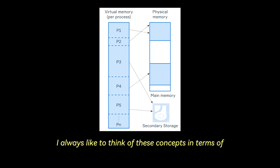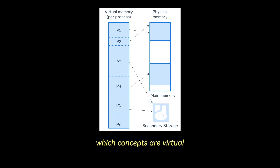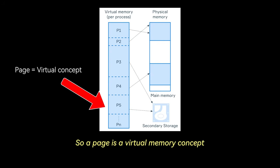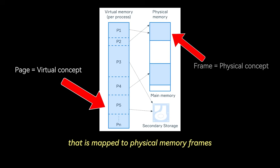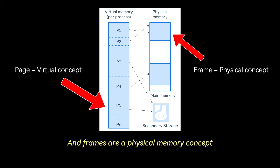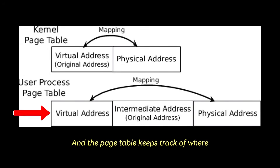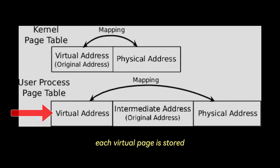It helps to think of these concepts in terms of what is virtual and what is physical. A page is a virtual memory concept — also known as a virtual page — and is a fixed-length contiguous block of virtual memory mapped to physical memory frames. Frames are a physical memory concept: fixed-sized blocks of RAM. The page table keeps track of where each virtual page is stored.